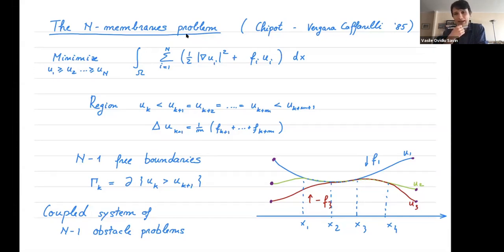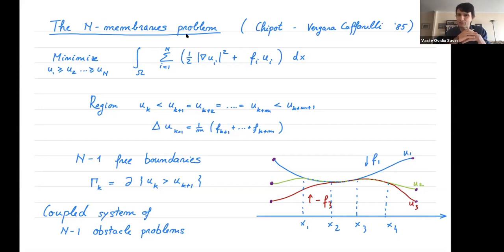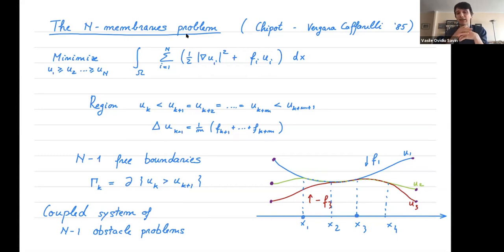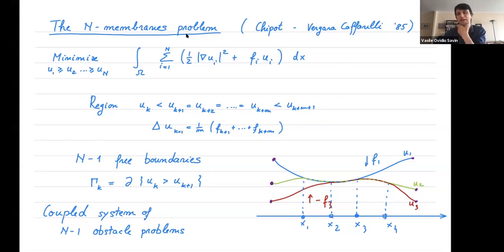In this one-dimensional picture, the free boundary between u1 and u2 corresponds to two points x1 and x3, where u1 separates from u2. The other free boundary, the separation between u2 and u3, corresponds to x2 and x4 — the second free boundary between the green and red lines.